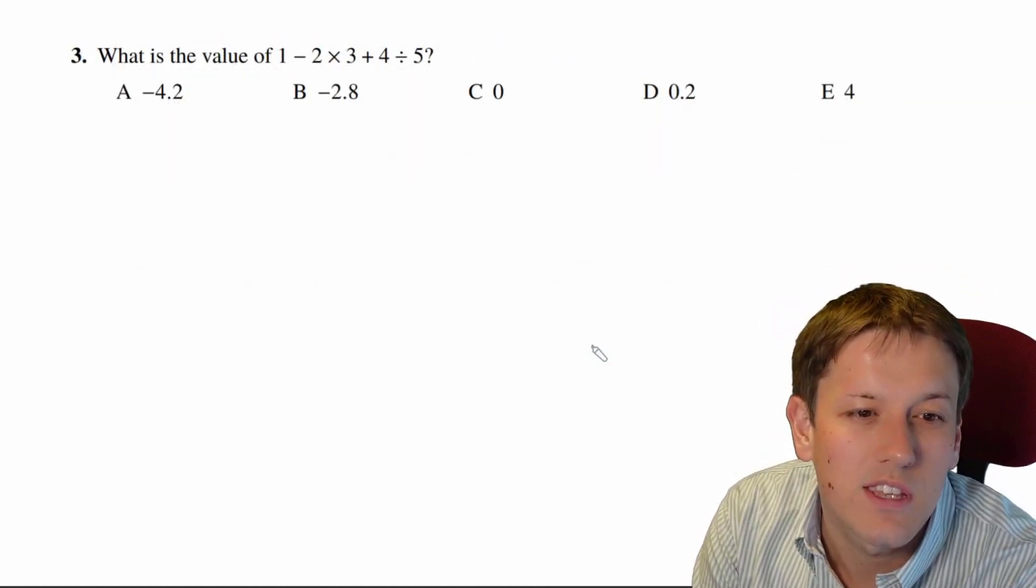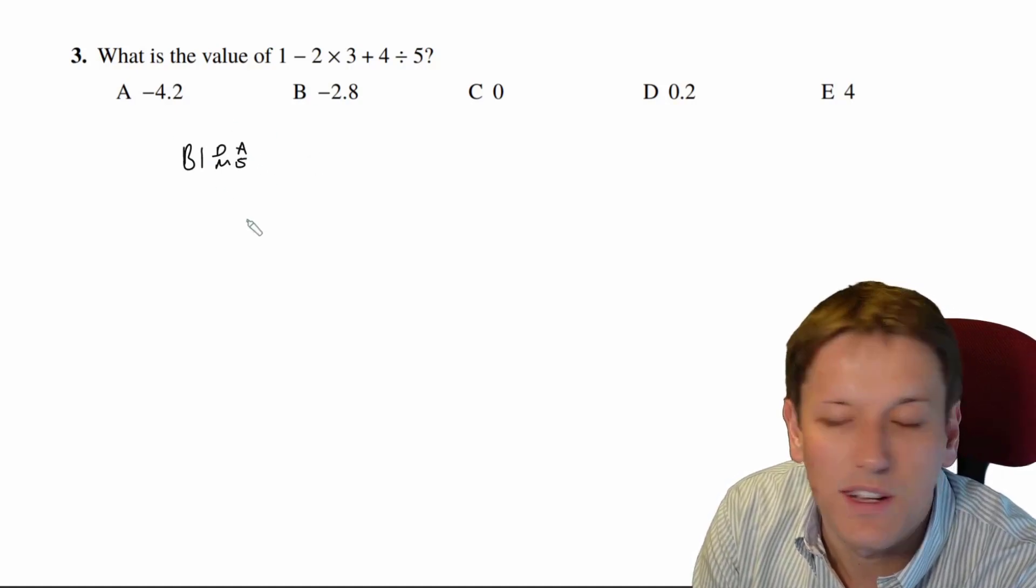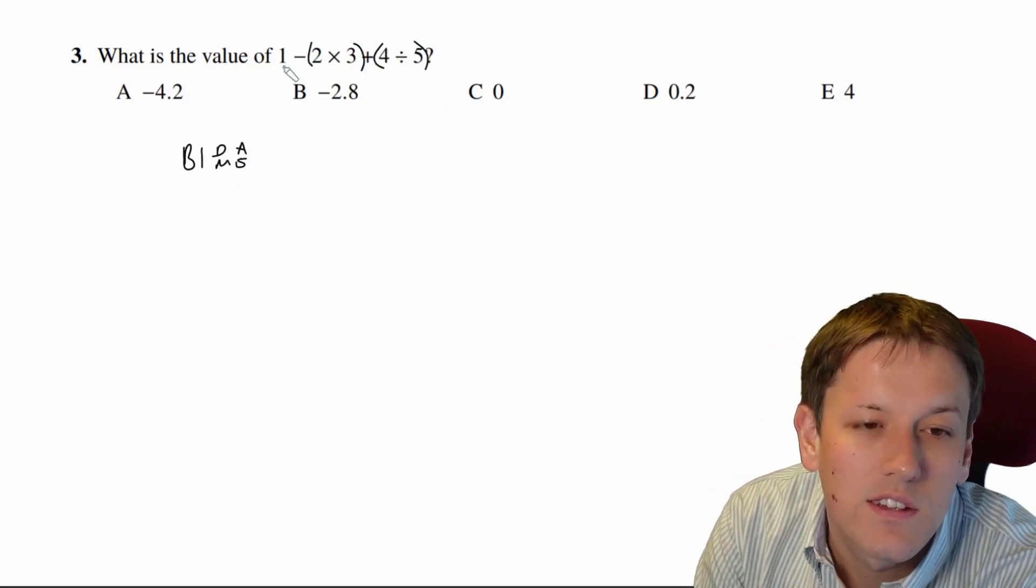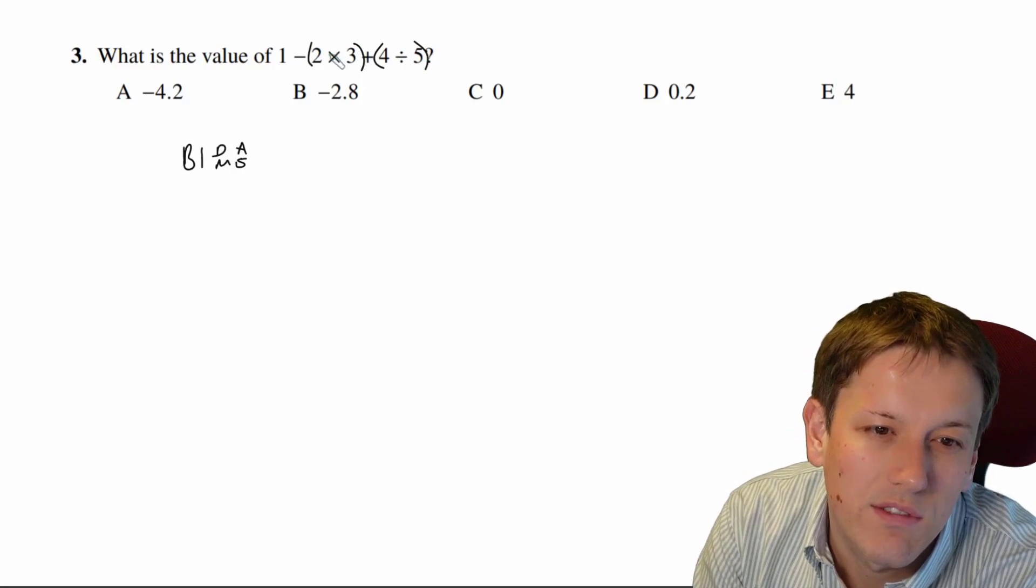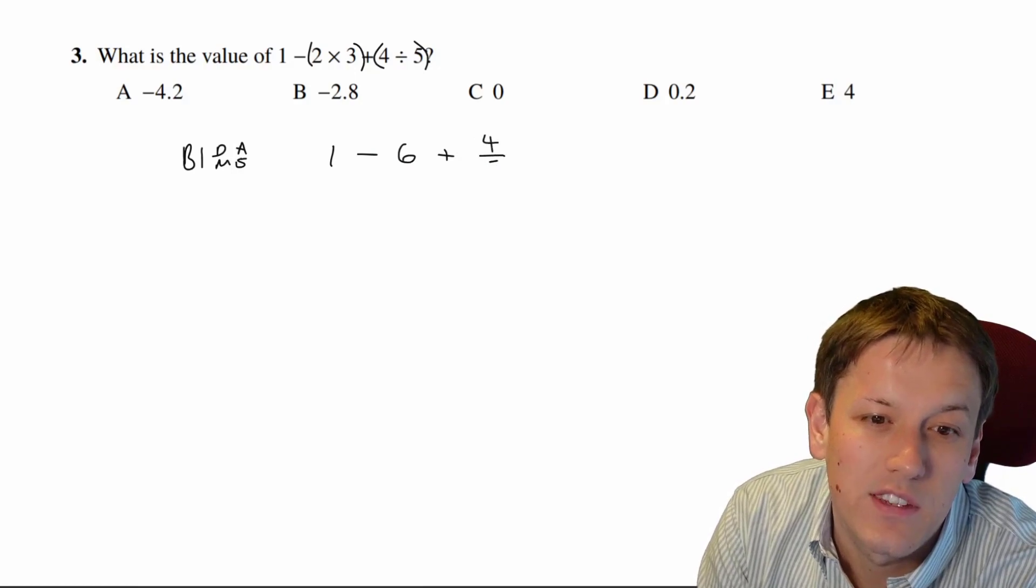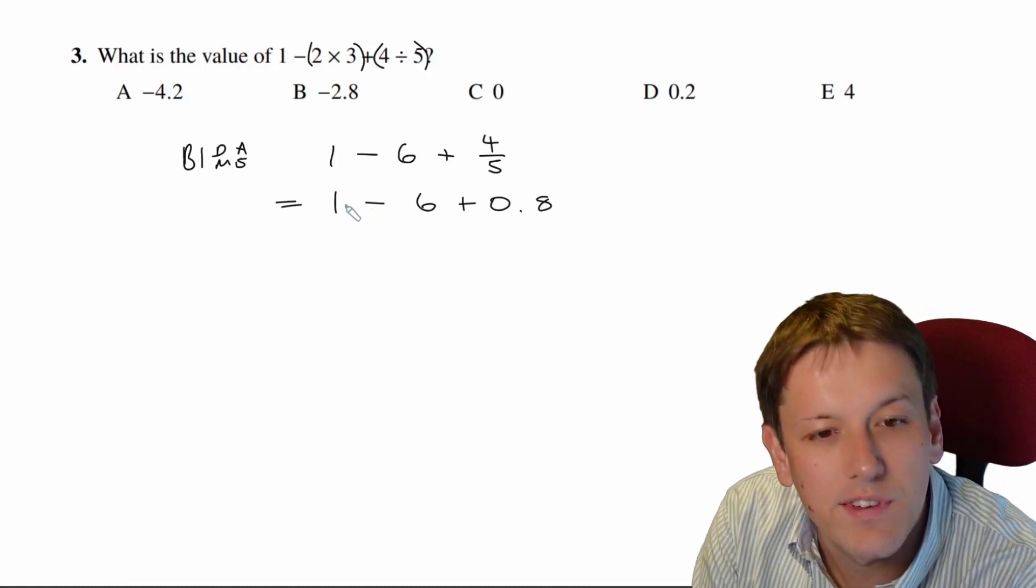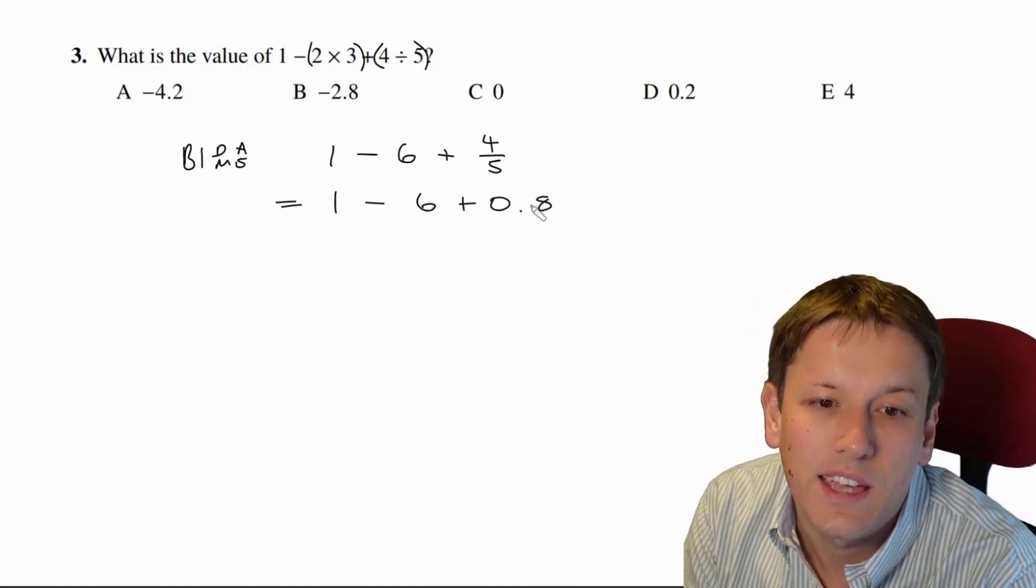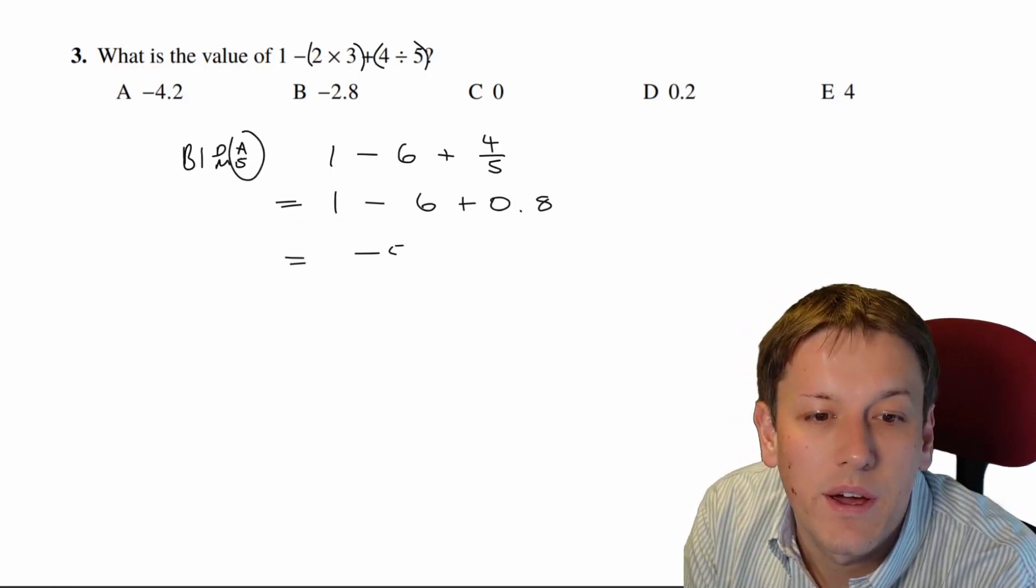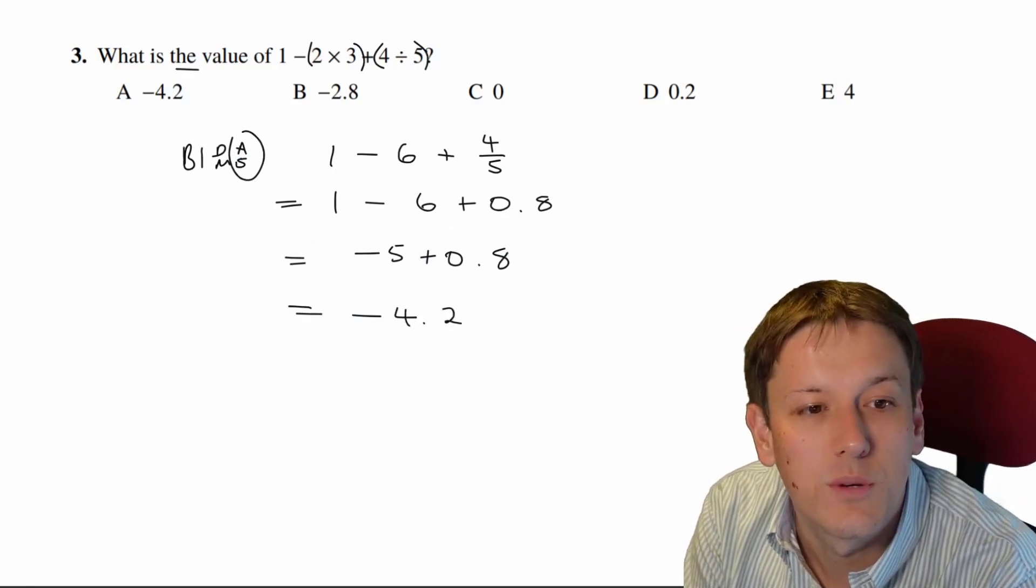Really just about the order of operations here, so applying BIDMAS, or whatever similar words you use here, I'm going to do the multiplications and the divisions first, so it's like I've got brackets around those, so the answer to this question will be 1 minus 6 plus 4 divided by 5 is 4 fifths. You could write that as 0.8 if you want to, but then for the addition and the subtraction, we just go left to right. Addition does not come before subtraction, they have equal priority here, so this is going to be minus 5 plus 0.8, and minus 5 plus 0.8 then gives us minus 4.2, and the answer is A.